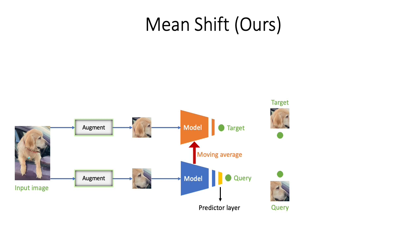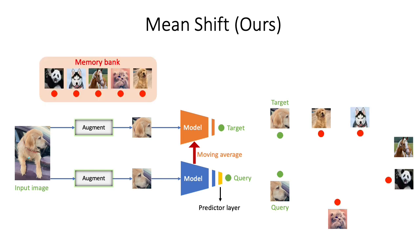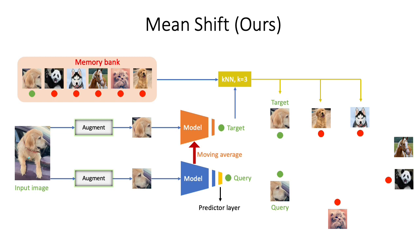We start off with the setup of BYOL. An input unlabeled image is augmented twice — one augmentation is passed through the target model and the other through the query model. Since we already have the moving average target encoder, we can simply add its output to a queue to maintain a memory bank, similar to MoCo, but the memory bank is not used for contrast. Instead, we use it to sample nearest neighbors. Before we sample the nearest neighbors, we first add the target representation to the memory bank.